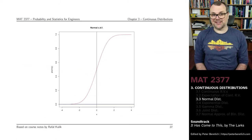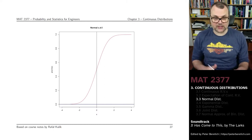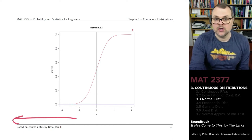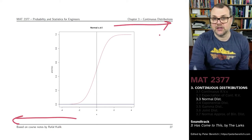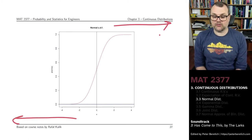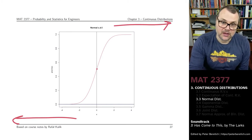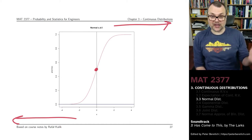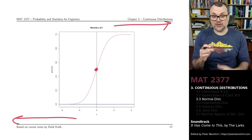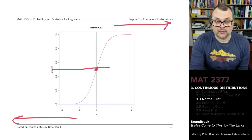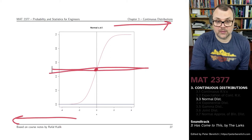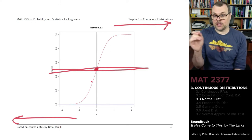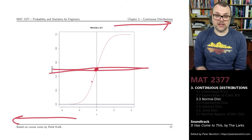The corresponding CDF looks like this. When x goes to minus infinity, this goes to 0. When x goes to positive infinity, this goes to 1. We've noticed that the PDF was symmetrical — it looks the same before x as it does after x, at least as a mirror image — which means we would expect the value at x equal to 0 to correspond to the halfway mark for the CDF.